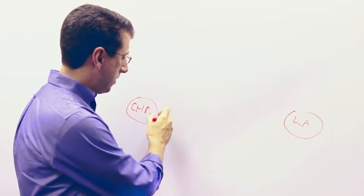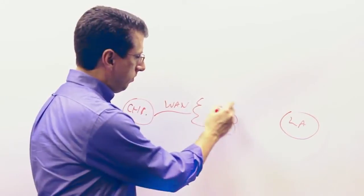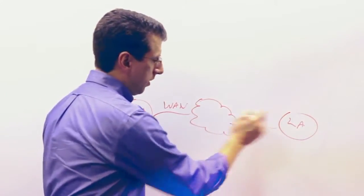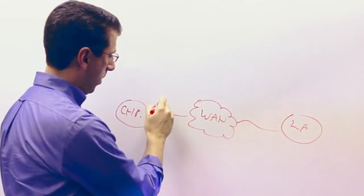And typically what happens is they're connected through a wide area network that goes through some sort of a, we'll call this the WAN, and the WAN connection is an IP connection into that WAN.